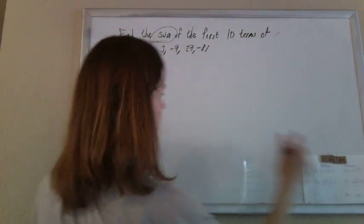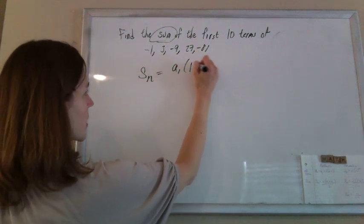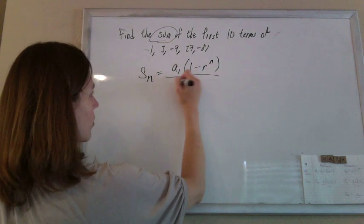Sum of a geometric sequence, I'm using the sum formula. The sum of the first n terms is the first term times 1 minus r to the n over 1 minus r.